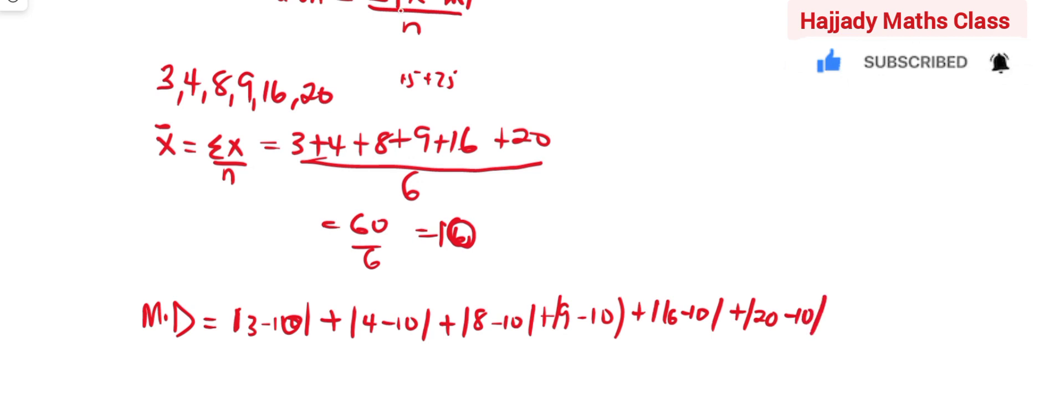So we are taking the absolute value of the observation. This is going to be over n, the observation we have in total, which is 6.